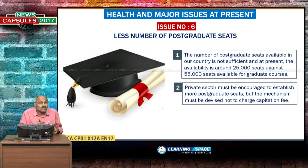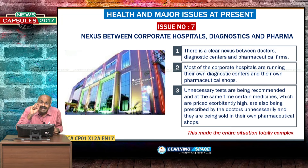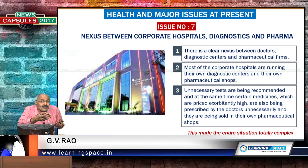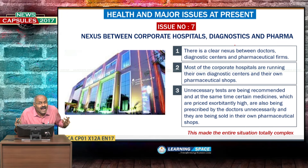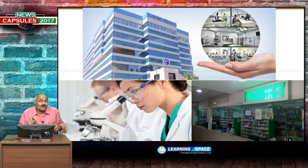The government's intention is to connect medical records online, which must be ensured immediately. There are too few post-graduate seats, though recently the government increased seats by approximately 4,000. The nexus between corporate hospitals, diagnostics and pharmaceutical companies must be broken immediately — doctors prescribe unnecessary tests to inflate diagnostic bills, and they recommend high-priced branded medicines instead of generic ones.